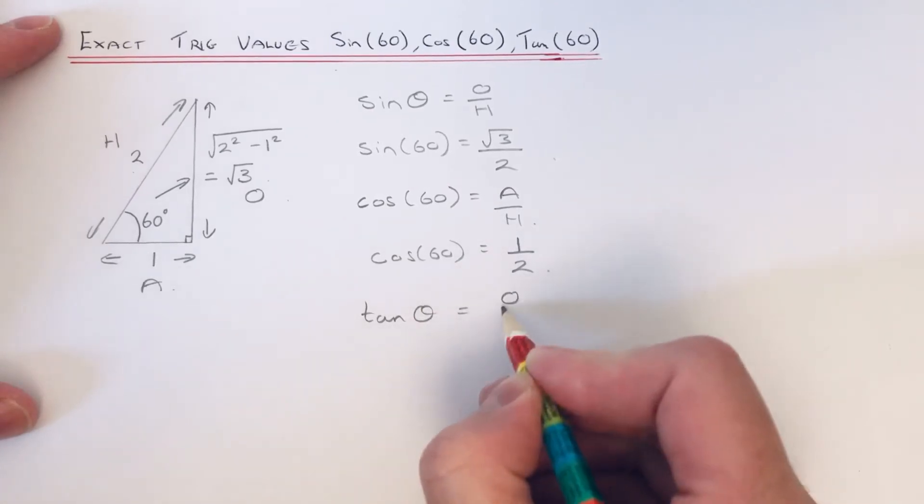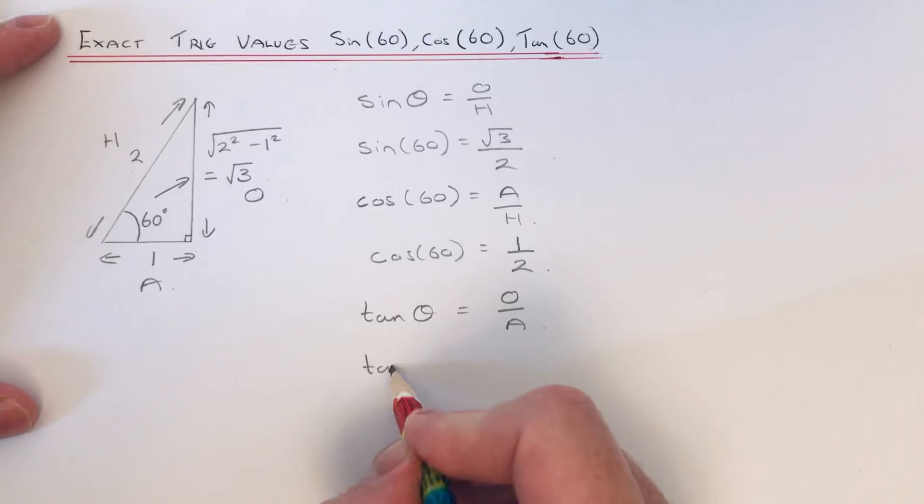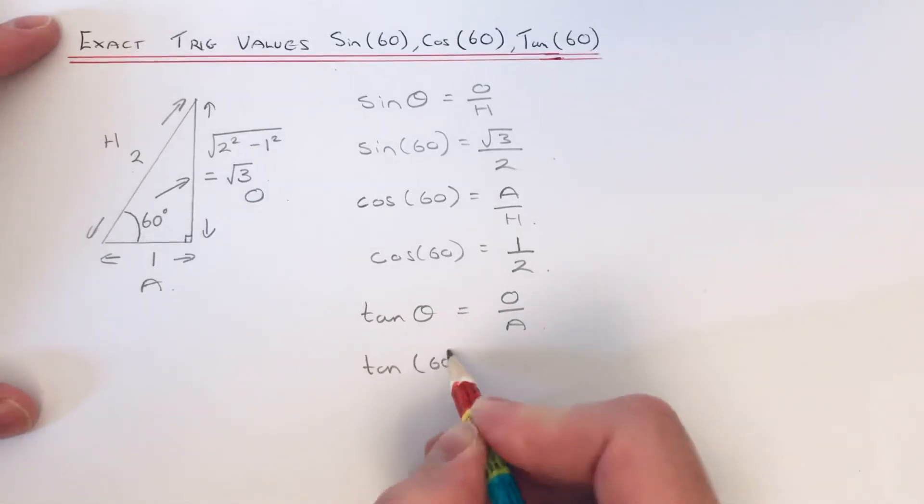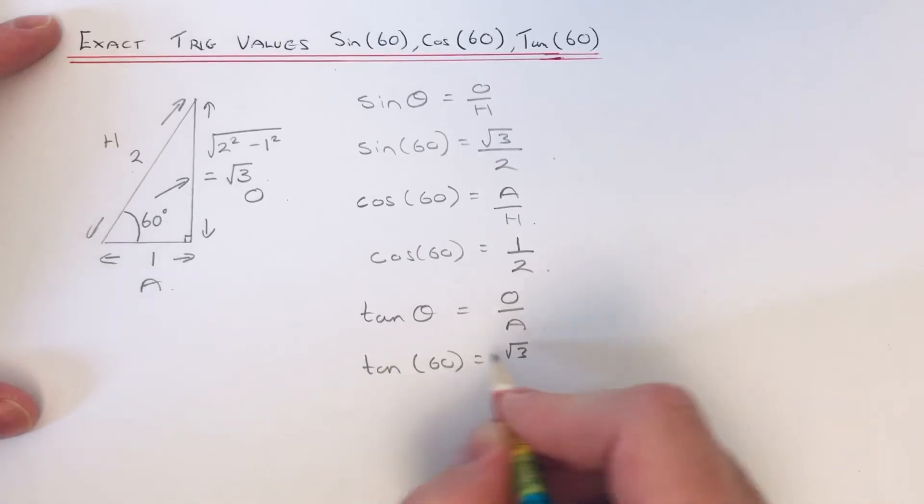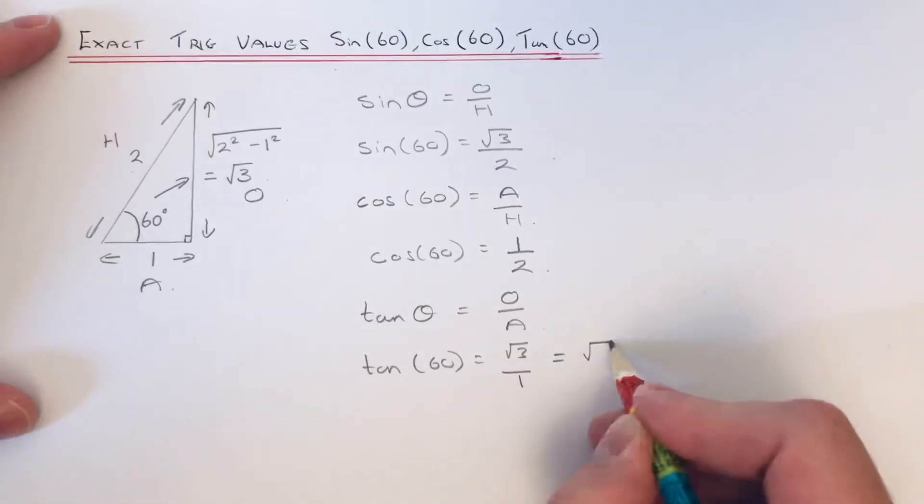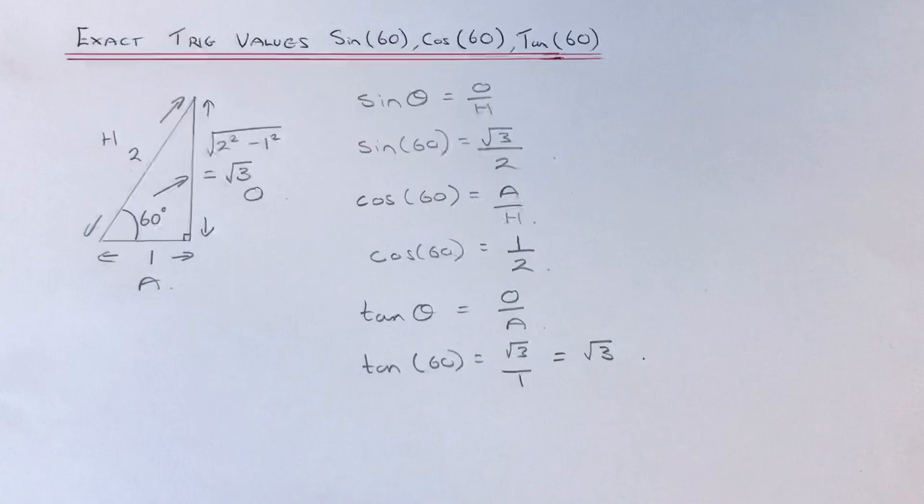Finally, let's do our value for tan. Tan is opposite over the adjacent, so tan 60, the opposite is root 3 and our adjacent is 1, so root 3 divided by 1 is the same as root 3.